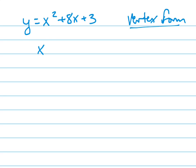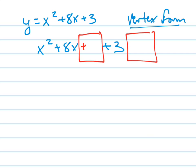The first thing to do is to rewrite this and leave a little space, because you're going to plug in right here. You're going to add something, and whatever you add, you also subtract on the outside of it. Take half of that coefficient and square it. Half of 8 is 4, and 4 squared is 16. Put it there and there.